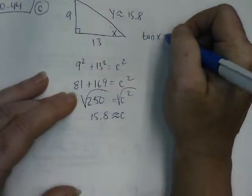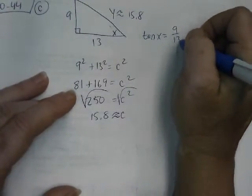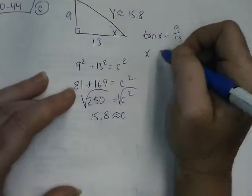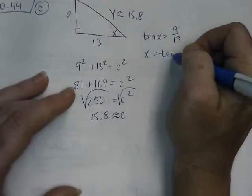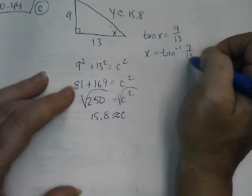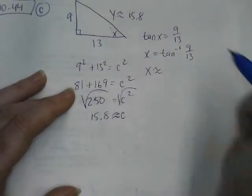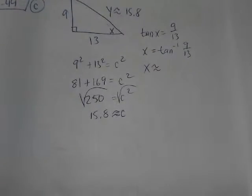So tangent of X equals 9 over 13. You can inverse tangent both sides, and you'll have X equals inverse tangent of 9/13. And that's going to equal what he said, about 34.7. Yeah.